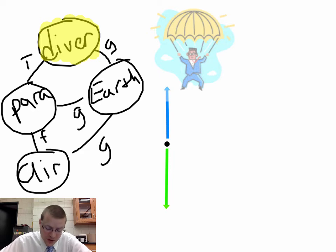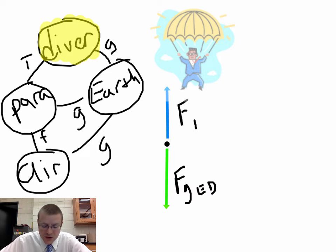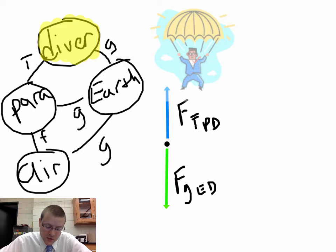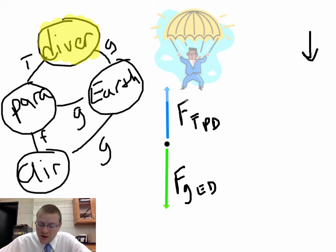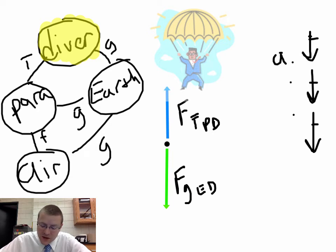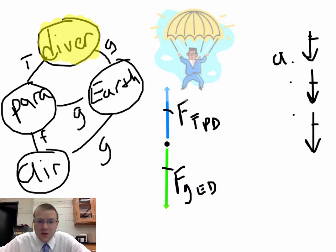Focusing on the diver, I see only two interactions, so I replace the diver with a dot and draw my force arrows. I've got a down arrow from the force of gravity and an up arrow from the tension. You want to label them: force of gravity of Earth acting on the diver, and force of tension of the parachute acting on the diver. Since the diver is moving down at a nice steady speed, velocity is constant and acceleration is zero. That means these forces must be balanced — the down force and the up force are equal.